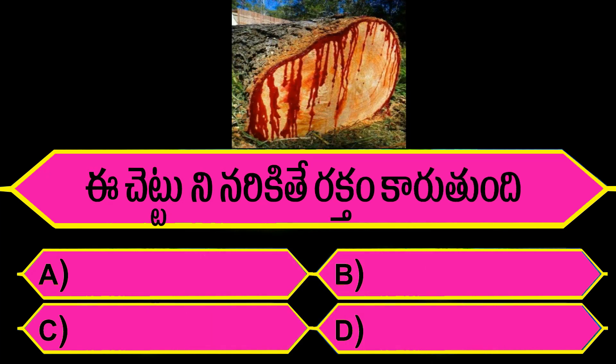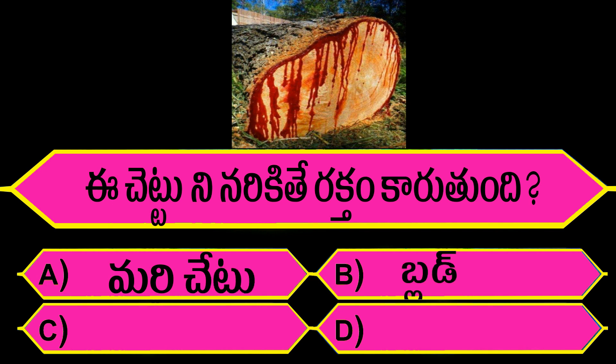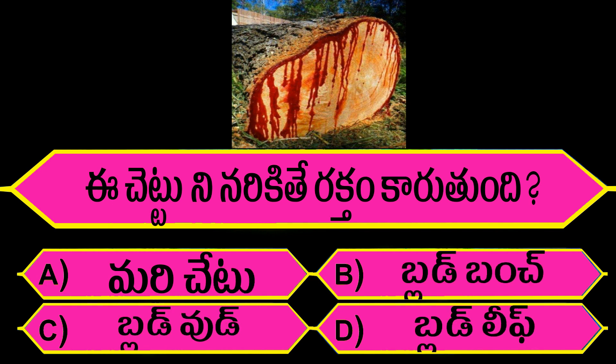E chetton ni narikite raktam kawru tundi. Option A: Marichetto. Option B: Blood Bunch. Option C: Bloodwood. Option D: Bloodleaf.